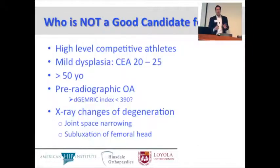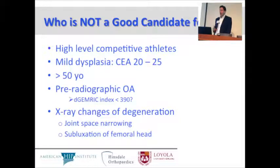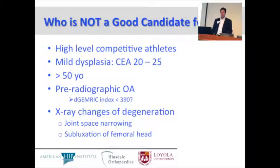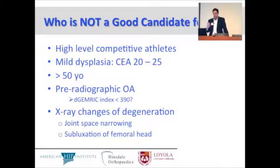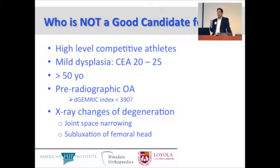If this talk is about arthroscopy, then we're talking about people who are not a candidate for a PAO. Who is not a candidate? High-level competitive athletes — mostly professionals — perhaps we'd want to avoid a PAO. Mild dysplasia with a center edge angle of 20 to 25, which Dr. Jackson addressed in his talk on instability. And patients more than 50 years old, where a PAO is probably not worth it.